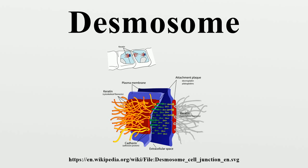Similar outbreaks occur with Hailey-Hailey disease, though the cause is not autoimmune but rather genetic. A haploinsufficiency of the ATP2C1 gene located on chromosome 3, which encodes the protein SPCA1, causes malformation of the desmosomes.